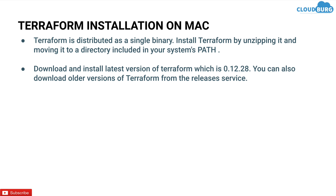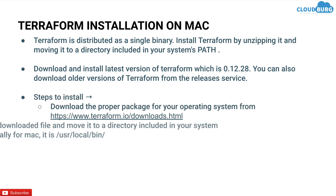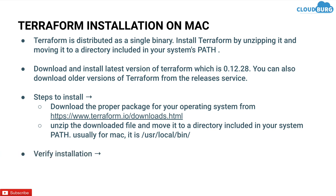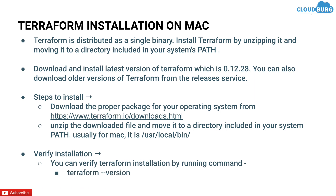You can also download older versions of Terraform from the releases page, but I would suggest using the latest version. The steps for installing Terraform locally are: download and unzip the file, then move it to a directory included in the system path — for Mac that is usually /usr/local/bin. You can then verify the installation by running the command terraform version.